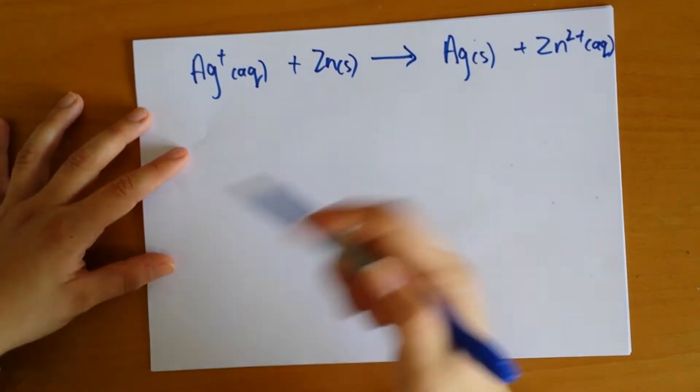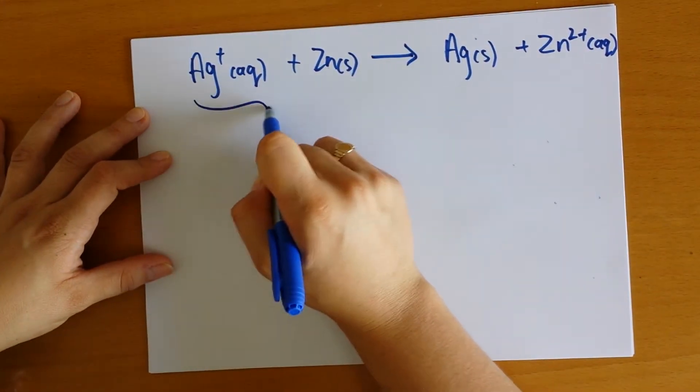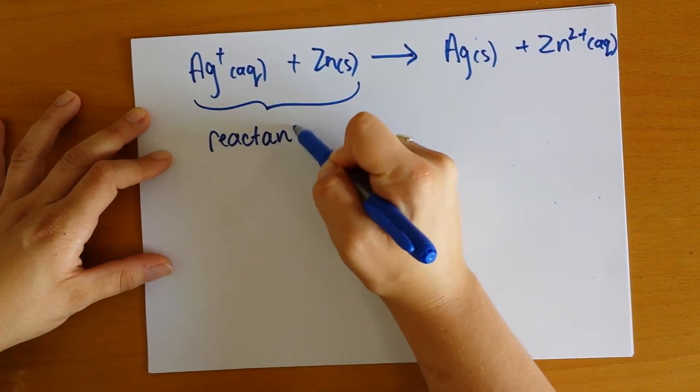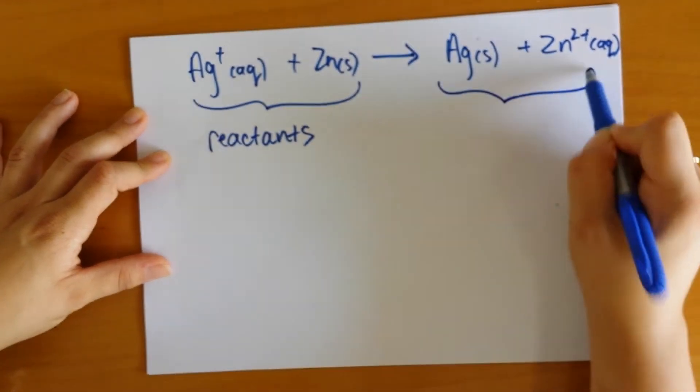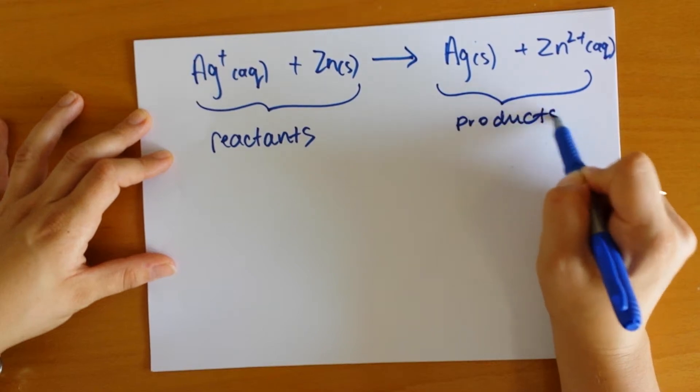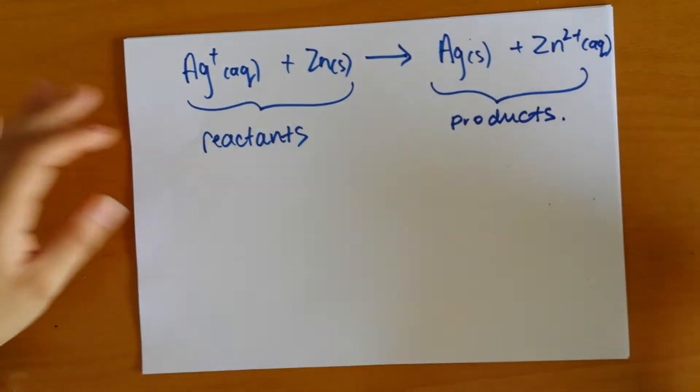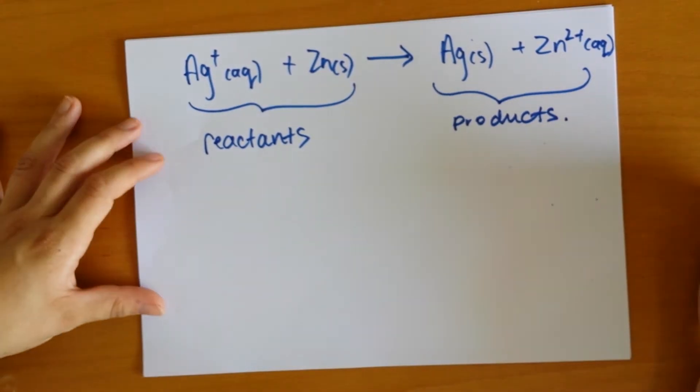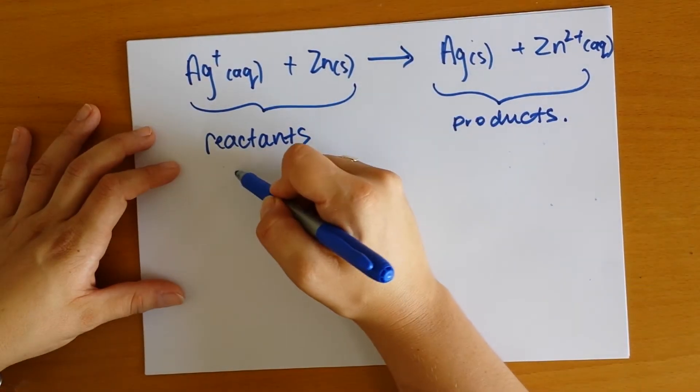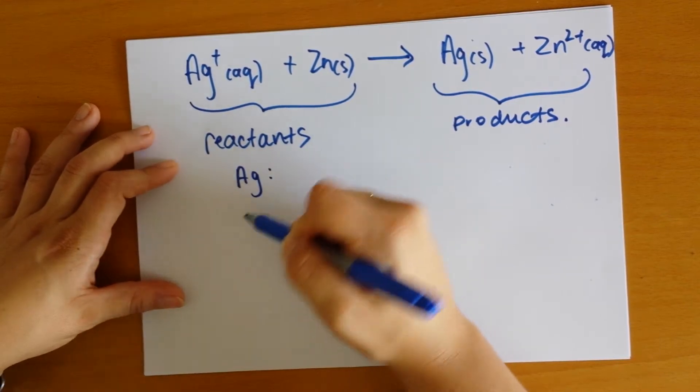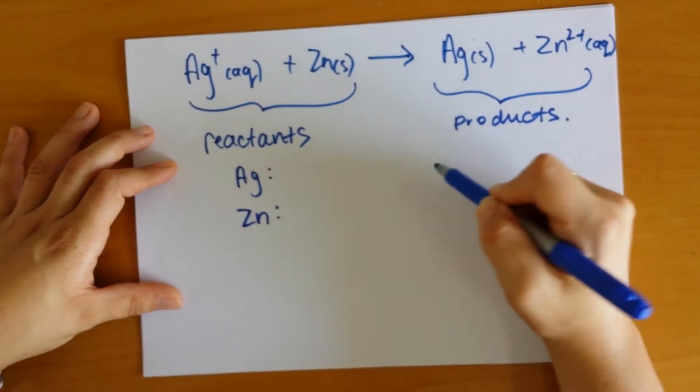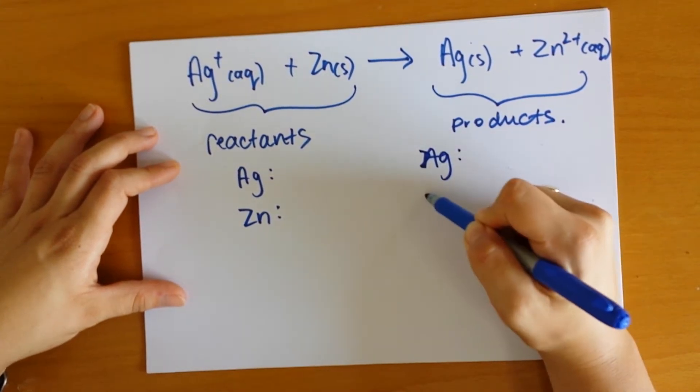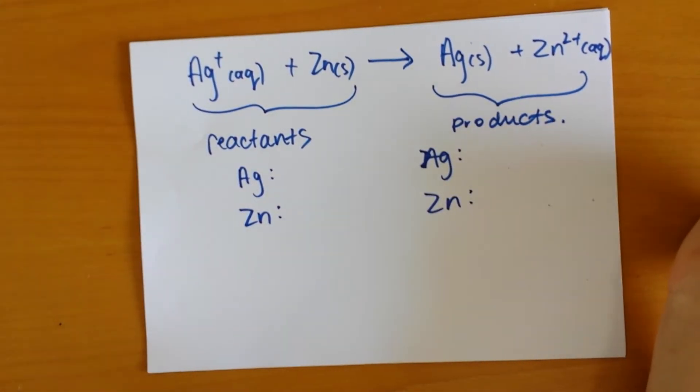Remembering our steps - these are our reactants and these are our products. We've only got one form of each atom to worry about, so we can start anywhere when making sure we've got balance because there's no complex compound or substance to worry about. Let's write out silver and zinc and see how much we've got on each side.